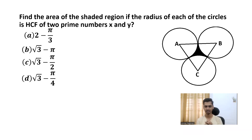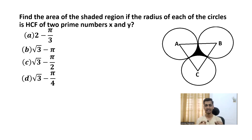It looks a little perplexed, right? It is confusing you, but it is very simple. You want to find the area of that shaded region. You can see a picture on the right-hand side — you want to find that black colored shaded region. It is given that the radius of each circle is the HCF of two prime numbers x and y. So if you take two prime numbers x and y, what is the HCF of those prime numbers?